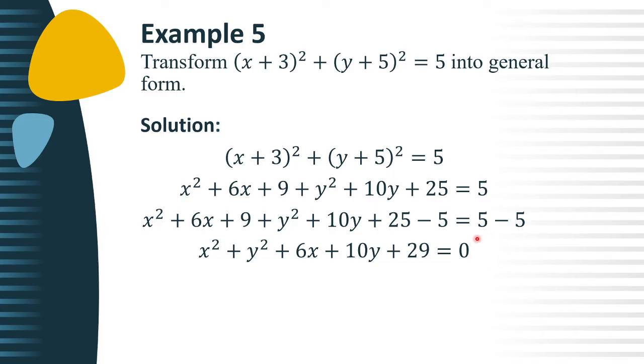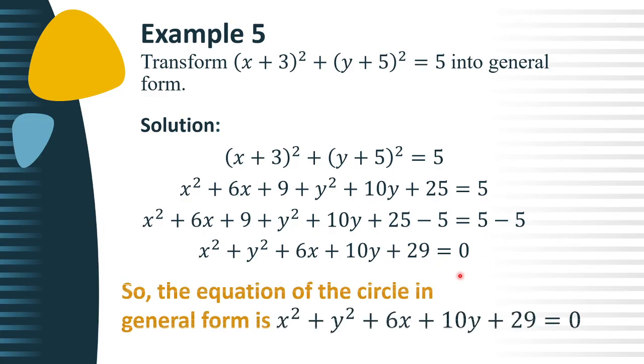On the right side, 5 minus 5 equals 0. So the equation of the circle in general form is x² + y² + 6x + 10y + 29 = 0. This will be our final answer.